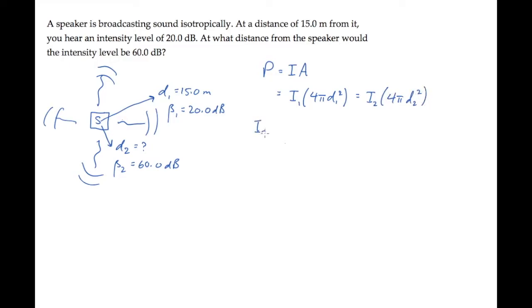From this expression, we see that the ratio of the intensities is the inverse ratio of the square of the distances. In this problem, we don't know the intensities, but we do know the intensity levels.